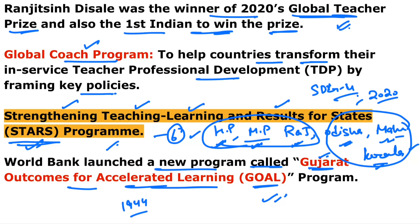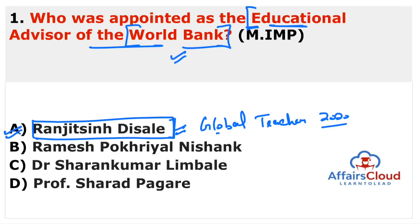The World Bank and the International Monetary Fund were established simultaneously and are known as the Bretton Woods Twins. The World Bank president is David Malpass and it has 189 member countries, while the IMF has 190 member countries. Other options in this question are also important: Ramesh Pokhriyal Nishank recently won Sahitya Gaurav Samman 2021, Dr. Sharon Kumar Limbali won Saraswati Samman 2020, and Professor Sharad Pagar won Vyasa Samman 2020.